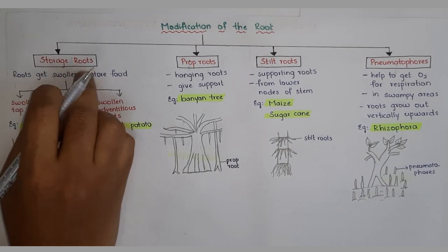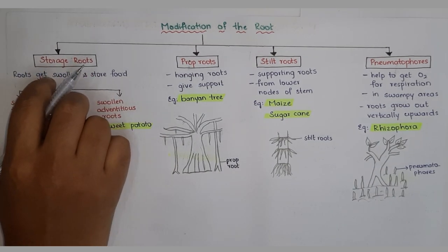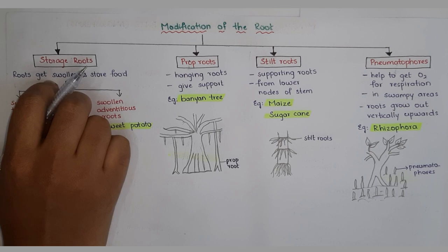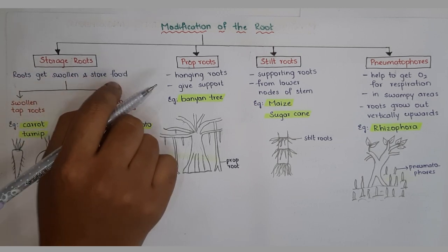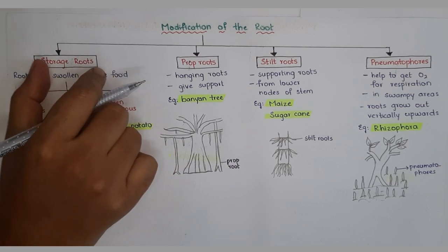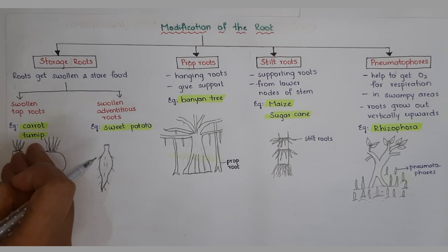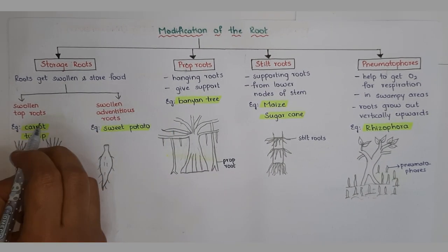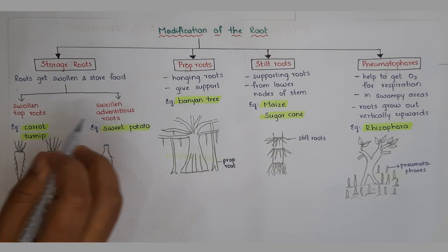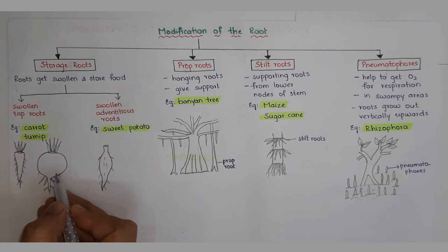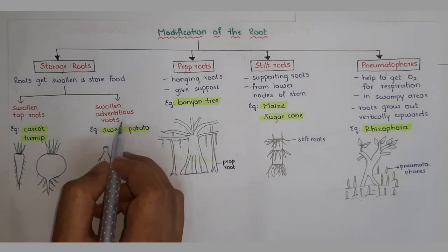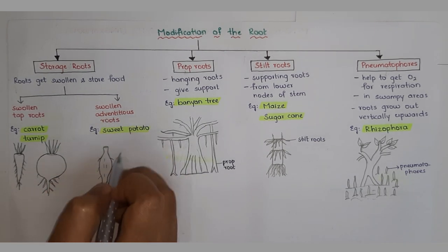In storage roots, excess food synthesized by the plant is stored in the roots in the form of starch, carbohydrates, water, etc., causing the roots to become swollen. Storage roots are present in swollen tap roots or swollen adventitious roots. Examples of swollen tap roots are carrot and turnip. The example of swollen adventitious roots is sweet potato.